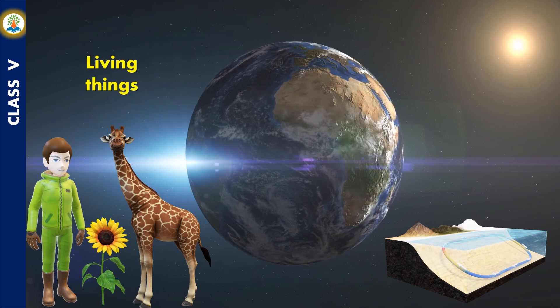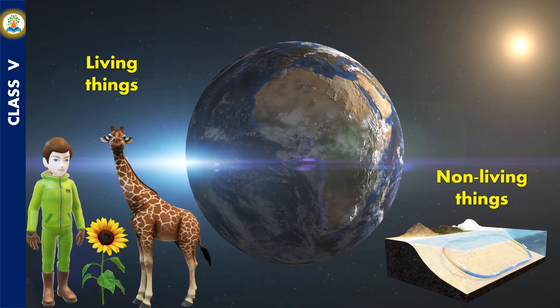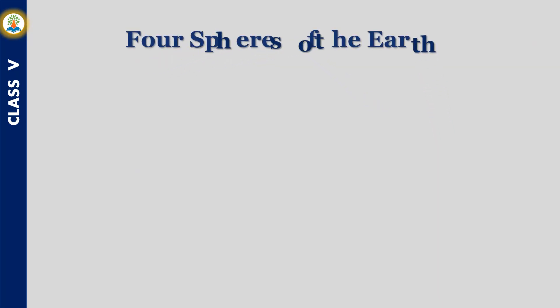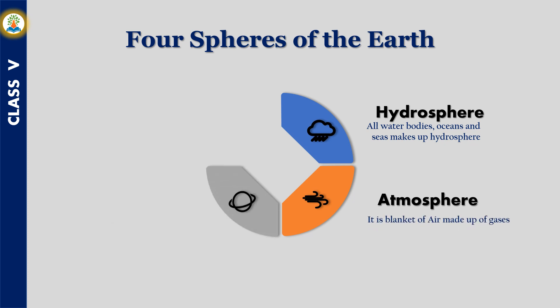The four spheres of the Earth are: hydrosphere, atmosphere, lithosphere, and biosphere.